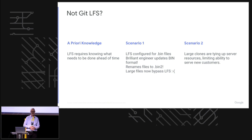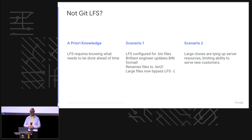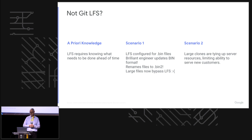LFS is using some pre-existing hooks called smudge and clean filters that are basically pre and post hooks. When you're about to push a large object, Git LFS substitutes a URL that points to that object in place of the object. The problem is that you have to have everything pre-configured for that to work correctly. For example, if you've configured LFS for all your .bin files and an engineer creates a .bin2 format, those files start getting checked in and bypass LFS. Since I maintain a server team, being able to serve lots of customers effectively is really important. Large clones over slow connections — if you're cloning 10 gigabytes, you're tying up a thread on the server and using lots of bandwidth.